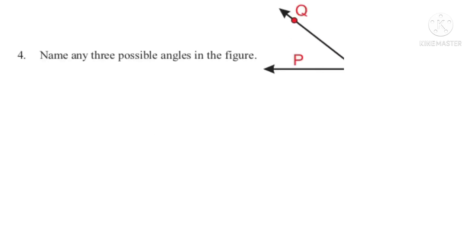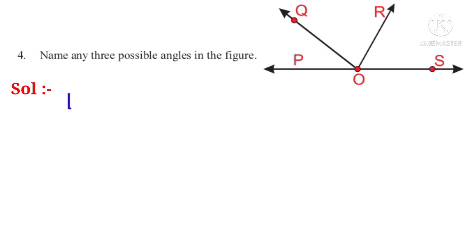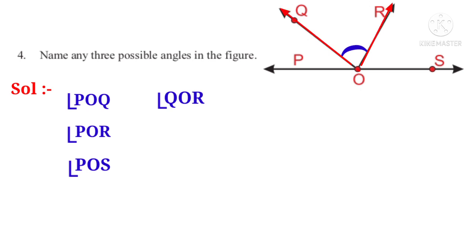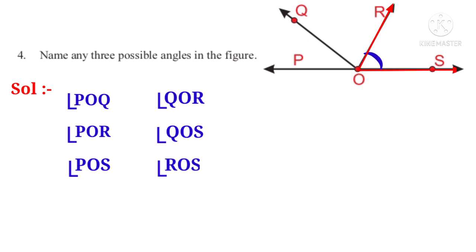Now let us do the fourth problem. Name any three possible angles in the adjacent figure. Solution. The first angle is angle POQ. The second angle is angle POR. The third angle is angle POS. The fourth angle is angle QOR. The fifth angle is angle QOS. The sixth angle is angle ROS.